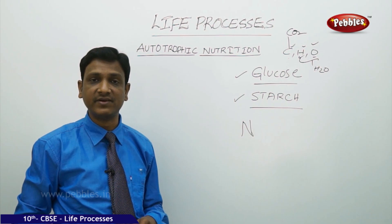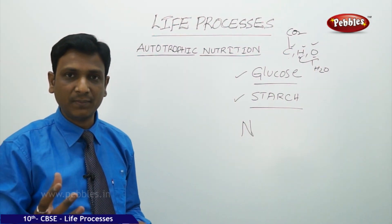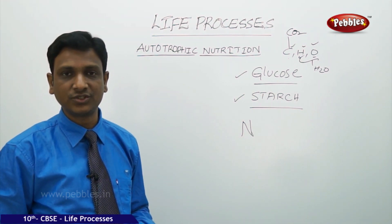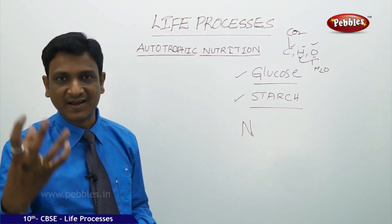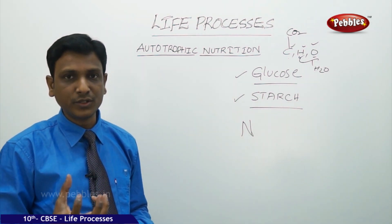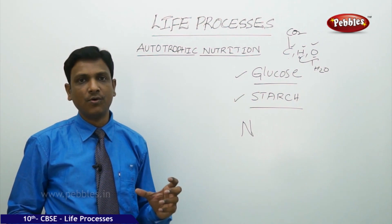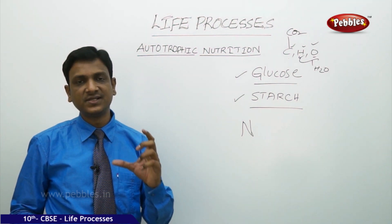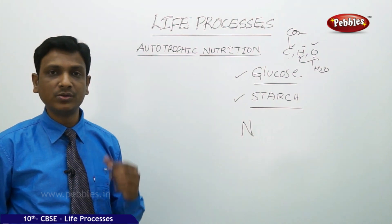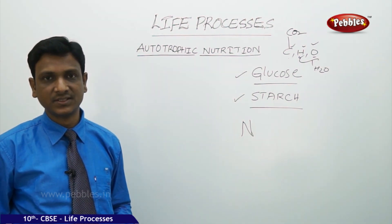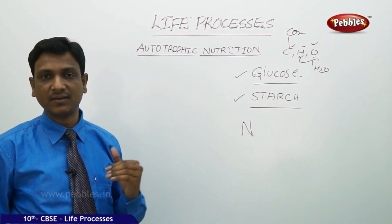Nitrogen is present in the atmosphere - 78% of air is nitrogen. But plants cannot directly take in nitrogen from the atmosphere through their stomata. Plants cannot use nitrogen in gaseous form from the air. Apart from nitrogen, they also need other elements like phosphorus, sulfur, and zinc.